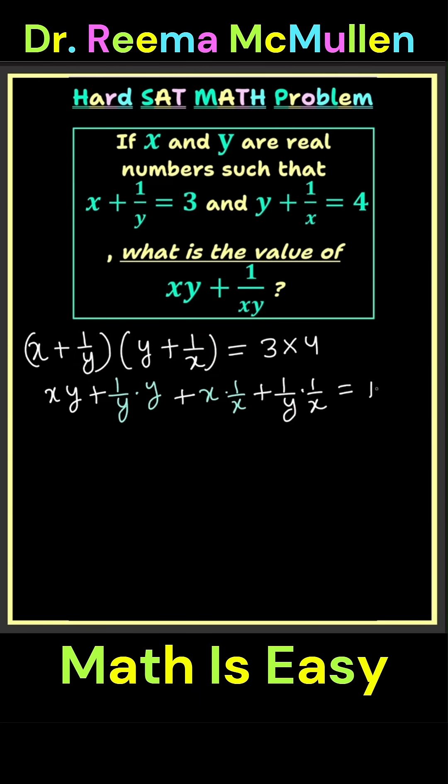And on the right-hand side, we have 12. All right, now we see that on the left-hand side, this y cancels out y in the second term, giving us just 1.